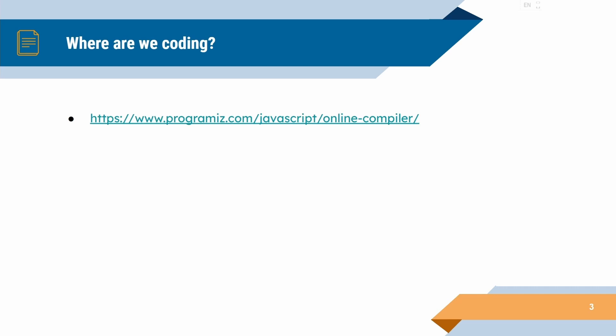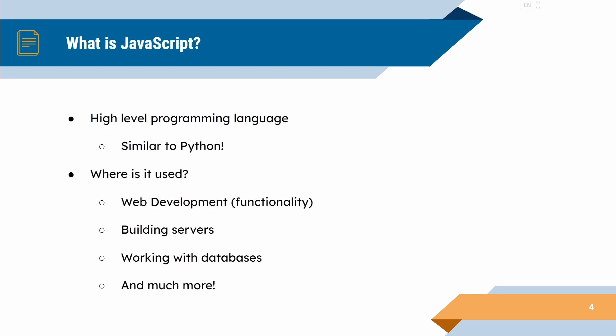Today we'll be coding in an online compiler called ProgramIs, and it's not going to be CodePen — we'll be returning to CodePen in the later stages of this workshop. JavaScript is a high-level programming language that is very similar to Python, and JavaScript is used a lot in web development, which is what we're going to be using it for in these workshops, but also for building servers, working with databases, and much more.